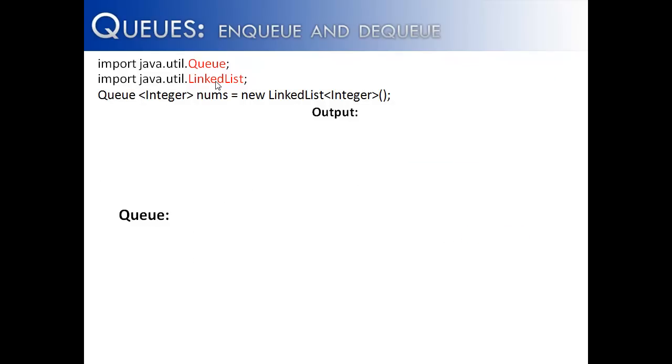In this last slide, what I want to look at is the difference between peek and element. You can see right now there is nothing inside of the nums queue. And so if I was to try to call peek right now, it would return null. But if I tried to call element, it would return an error,